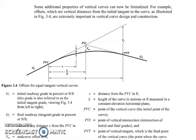Let us move on to some additional properties of the vertical curve. One important property is the offset — the vertical distance from the initial tangent to the curve. In our illustration of a crest curve, y is the offset at any distance x on the curve measured from PVC, y_m is the mid-curve offset located at PVI, and y_f is the offset at the end of the curve located at PVT.